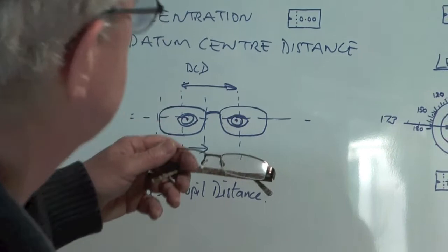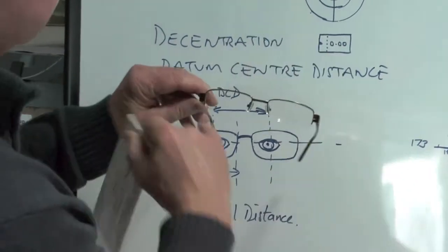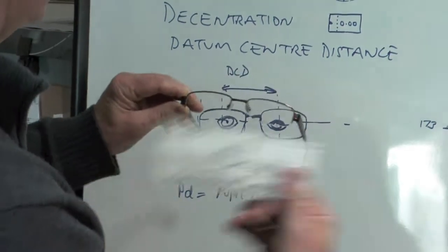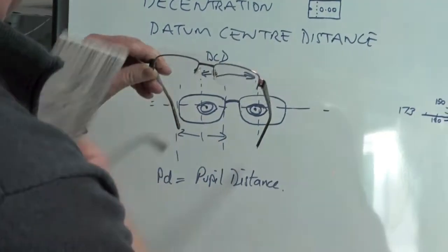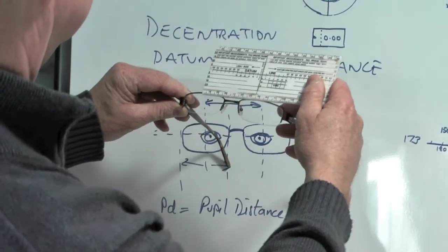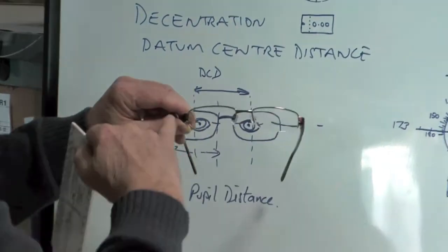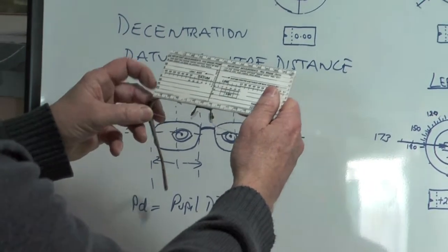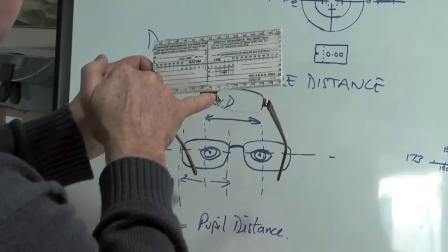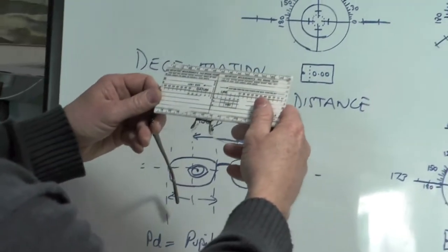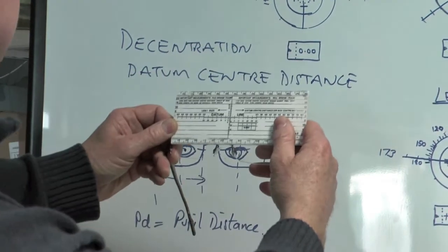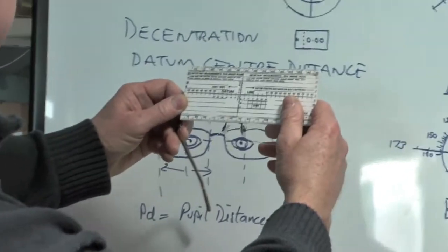We need to measure the distance between the center of this lens and the center of that lens. That's the DCD. Now it's very difficult to do it by guessing. So the best way to do it is to actually hold the ruler to start at the outside edge of one lens and measure it to the inside edge of the other lens. And that will give you a slightly more easier way of measuring it.